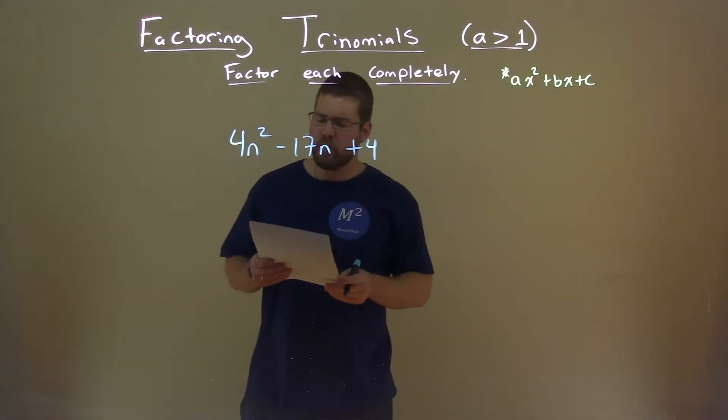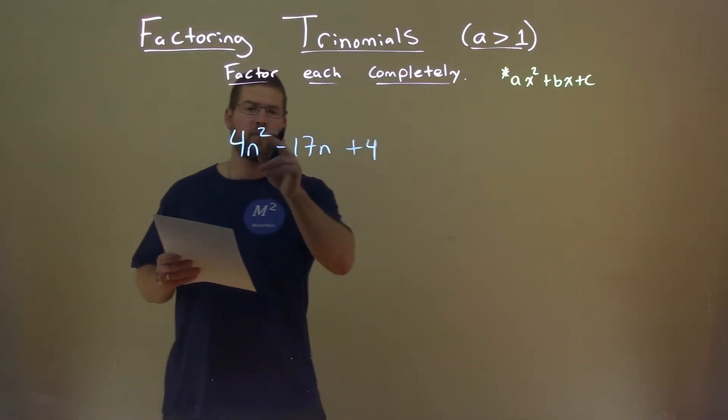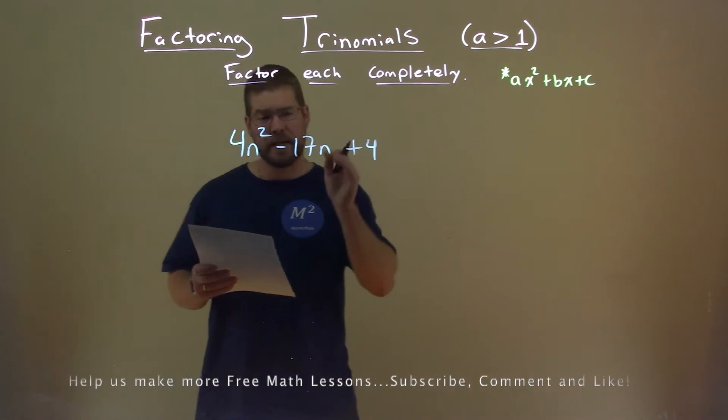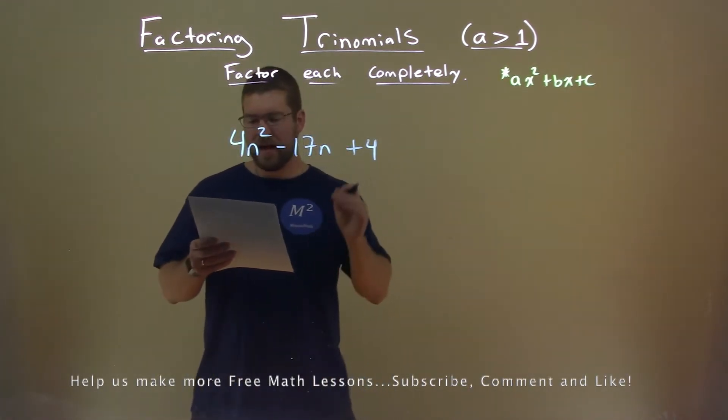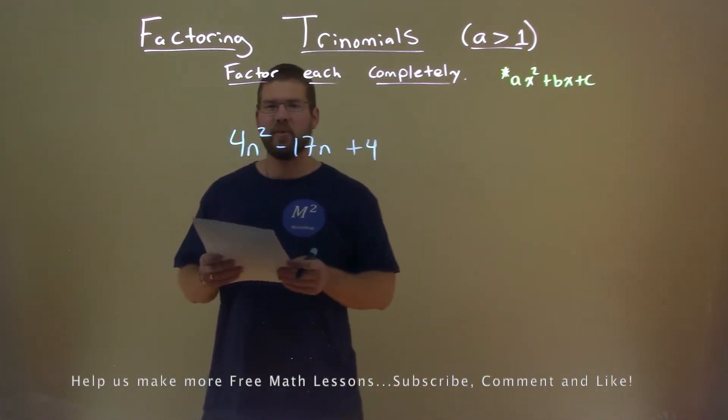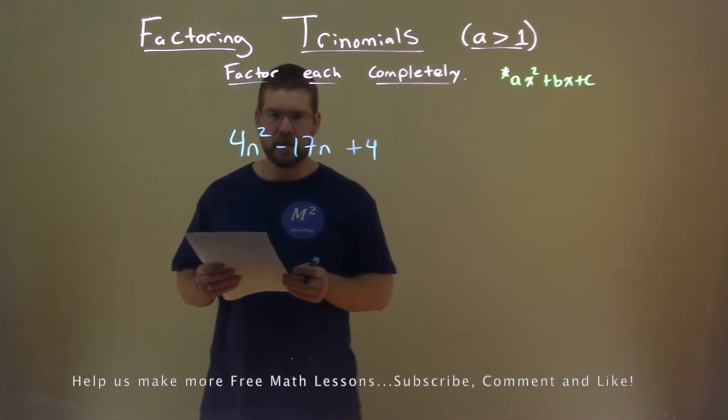We're given this problem right here: 4n squared minus 17n plus 4, and we need to factor this completely.